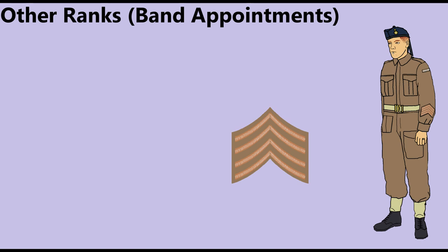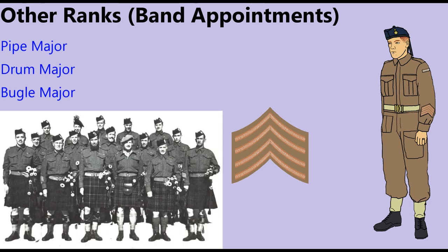Special appointments in Military Bands and Pipe and Drum Bands included Pipe Major, Drum Major, and Bugle Major. These appointments were designated by an inverted four-bar chevron and were usually held by Sergeants.